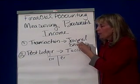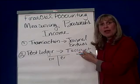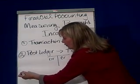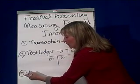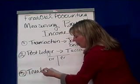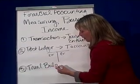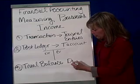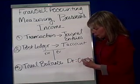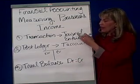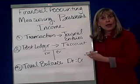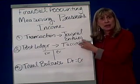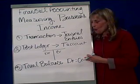Once we've posted to the ledger, we need to confirm that we copied our debits as debits and our credits as credits. In step three we prepare a trial balance. All the trial balance does is prove that after copying, our debits still equal our credits. We do this transactions-posted-to-ledger trial balance, and most businesses do this every day to keep up and make sure they're correct as they go forward.